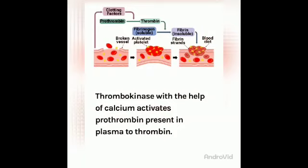Thrombokinase, with the help of calcium, activates prothrombin present in plasma to thrombin. Here you can see the flow chart of the clotting process. In the presence of the clotting factor, prothrombin converts into thrombin, and in the presence of thrombin, fibrinogen protein converts into fibrin, which is insoluble. Finally, we get a blood clot — in this manner blood clotting occurs.